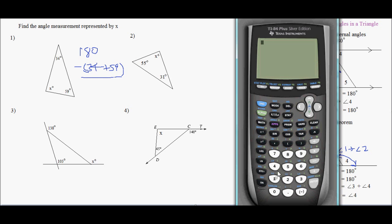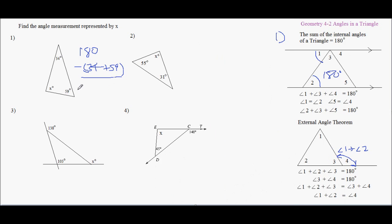So I could say 180 minus quantity, this would be 34 plus 59, the quantity. And I get 87. So x is 87.